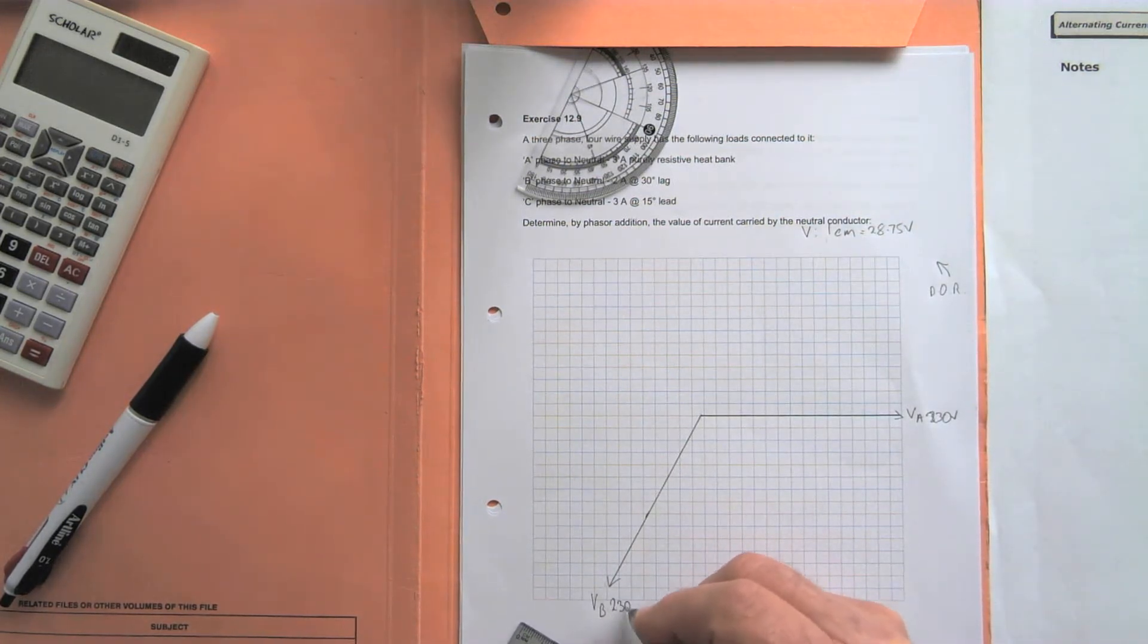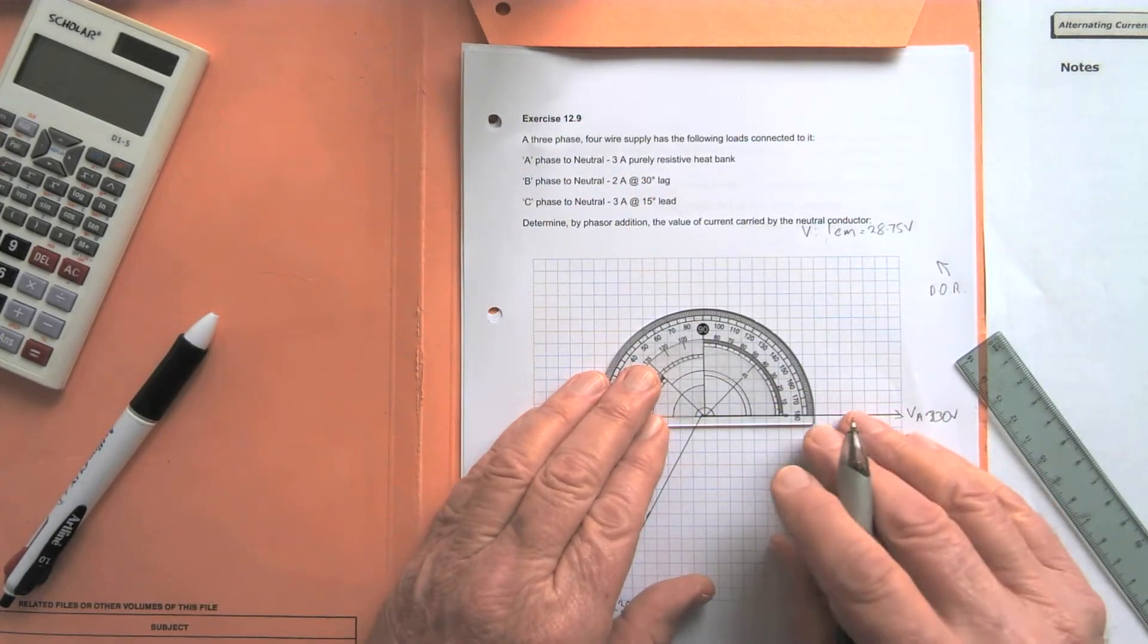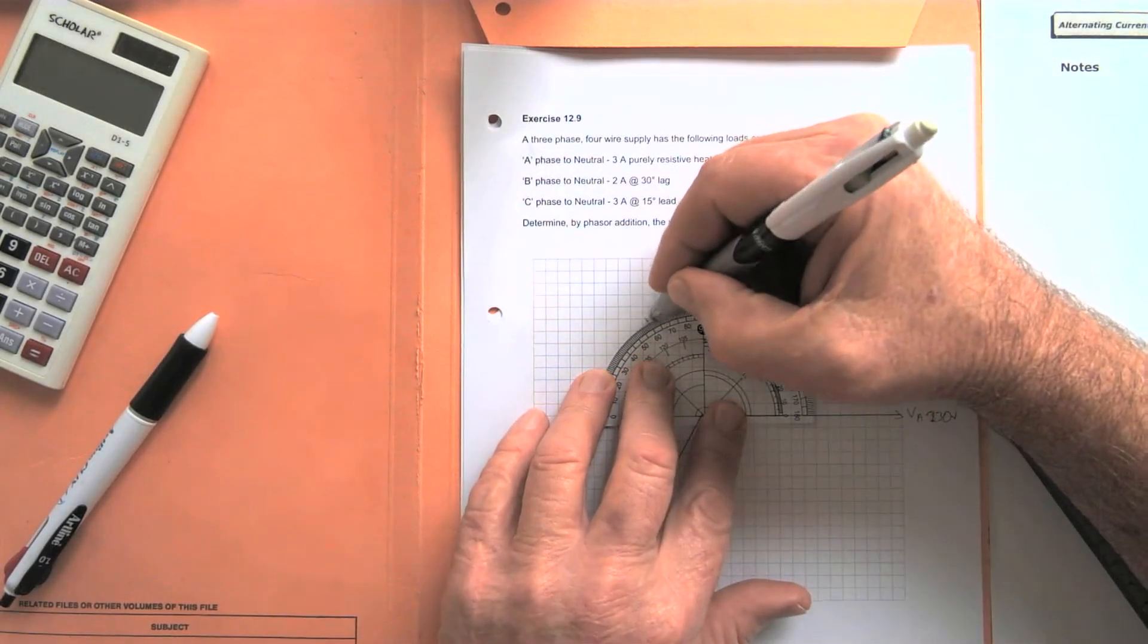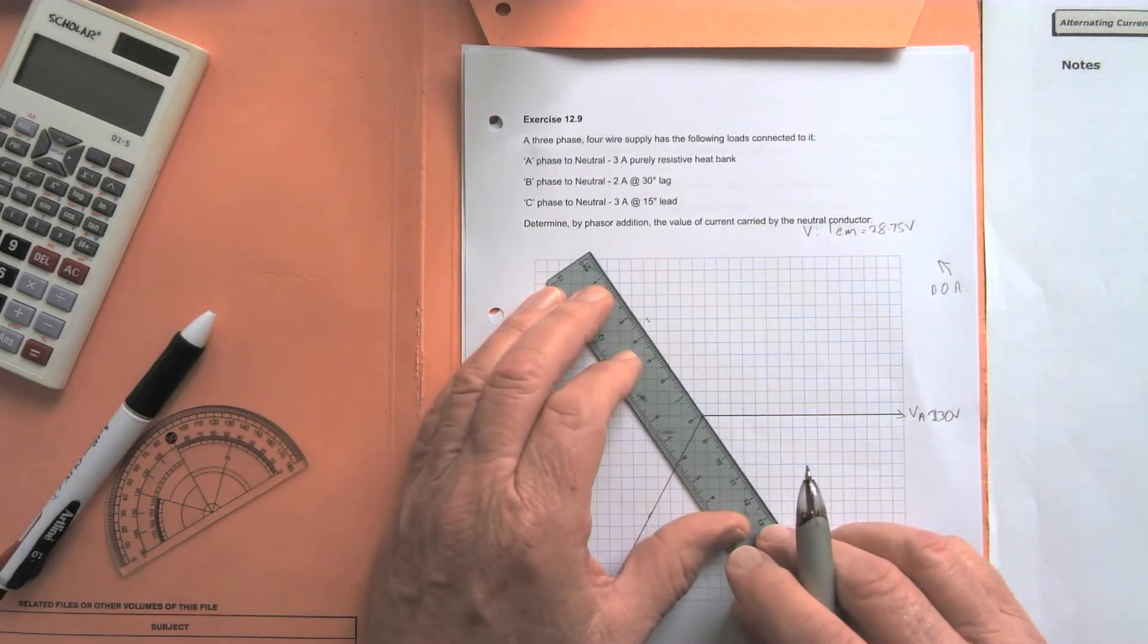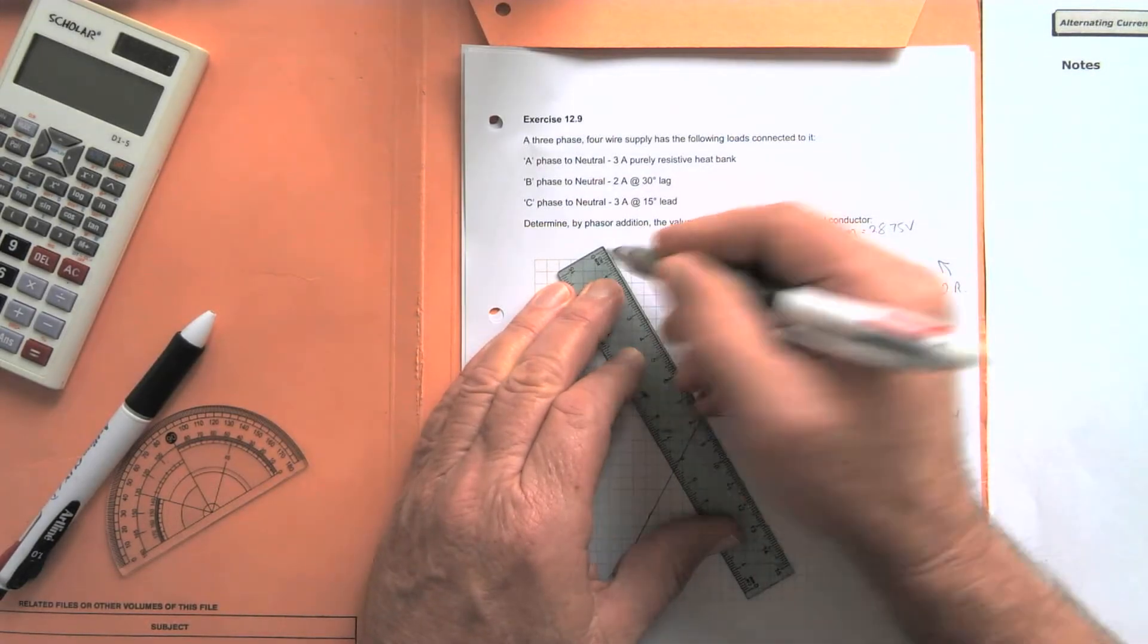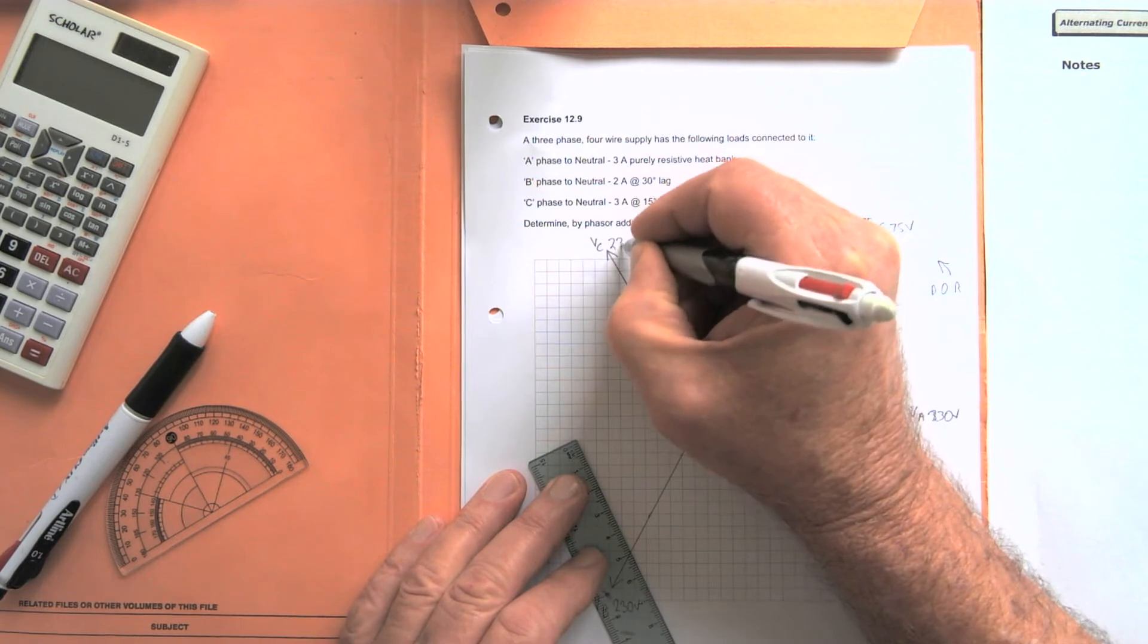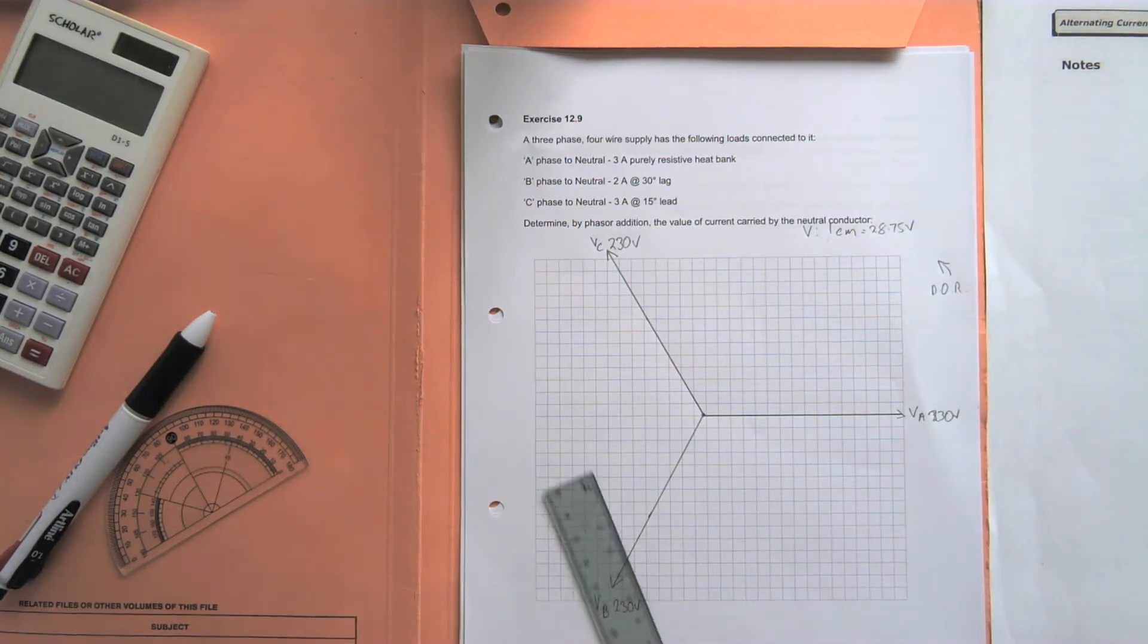And another 120 degrees later for the C phase, which would be up there at 120 degrees. There we go, up to there. So there's our three-phase voltages, VC at 230 volts, and there's our neutral star point, or the star point where the neutral is connected.